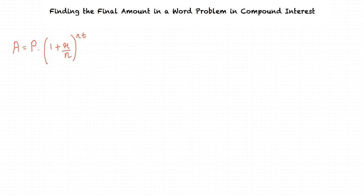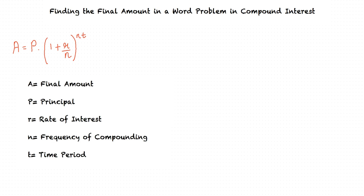Could you elaborate what each quantity stands for? Sure. A is the final amount, P is the principal, r is the rate of interest, n is the frequency of compounding, and t is the time period.